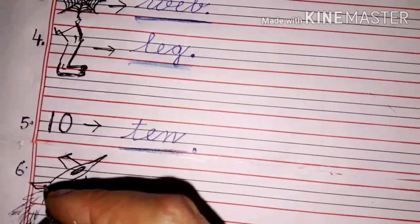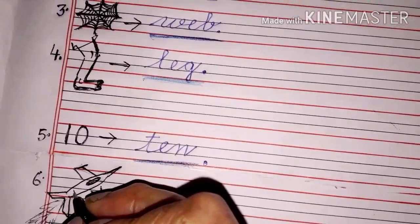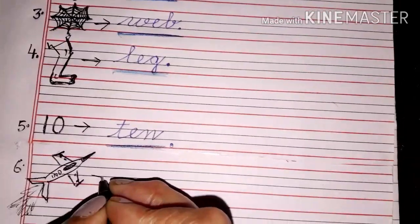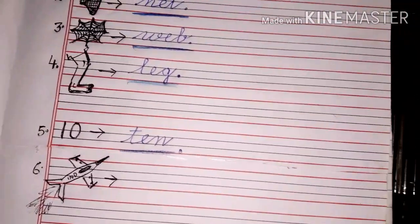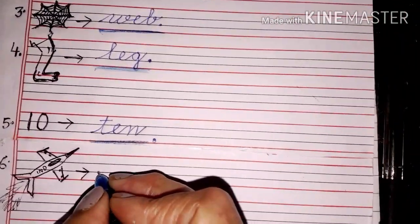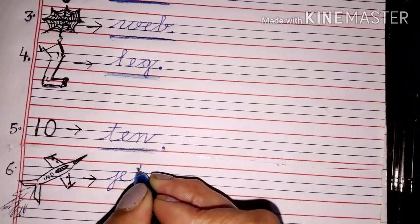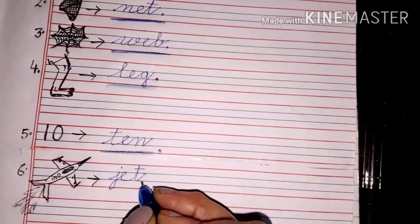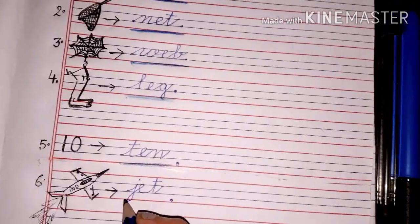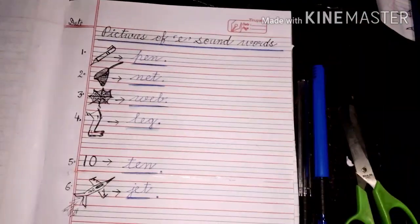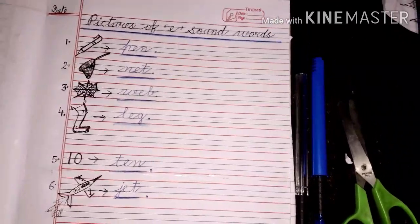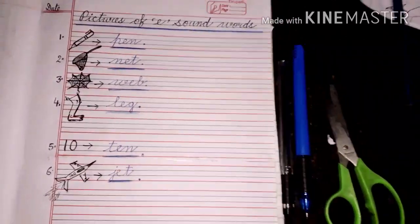Put an arrow and write here J E T jet. Now underline this.